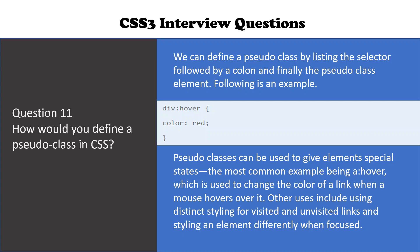The hover pseudo class is used to change the color of a link when a mouse hovers over it. Other uses include using distinct styling for visited and unvisited links, and styling an element differently when focused.